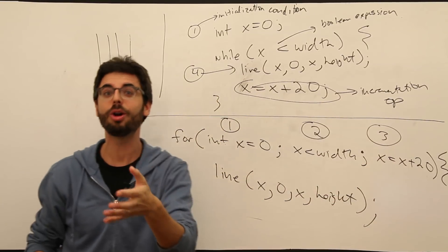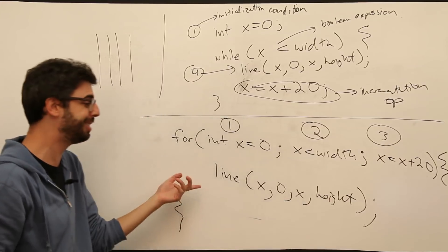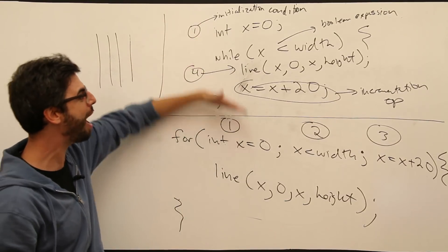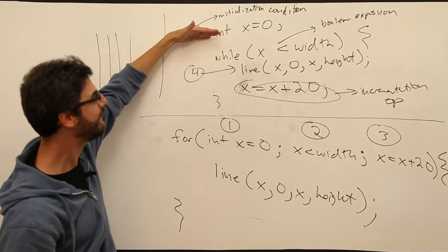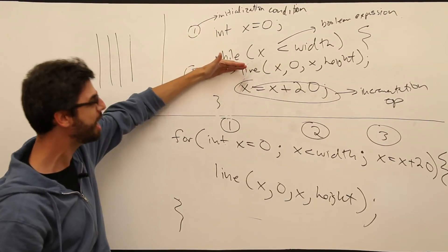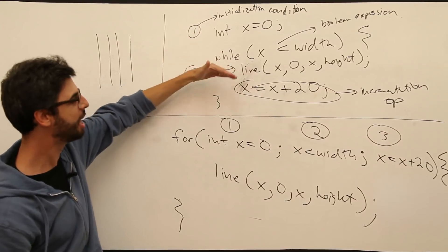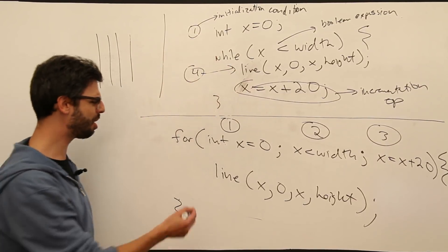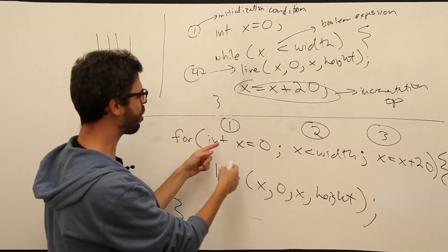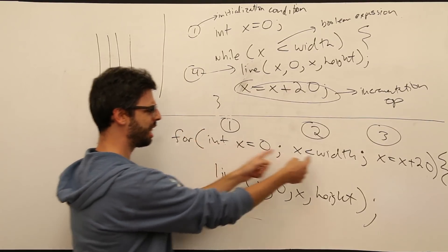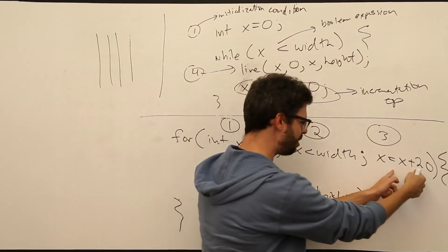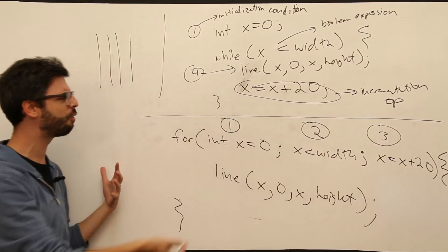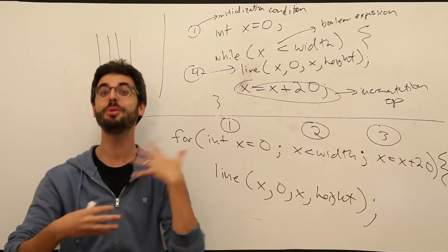In some world — which is your world, if this is the first time you're learning this — this is actually quite a bit more confusing. Because the while loop really says: first do this, then check the expression, then draw the thing, then increment; check the expression, draw, increment; check the expression, expression is false, leave the loop. With the for loop we're going somewhat out of order, but it will become intuitive to you.